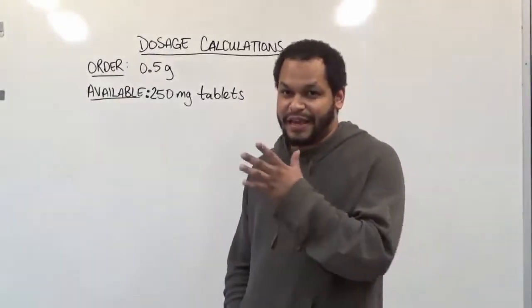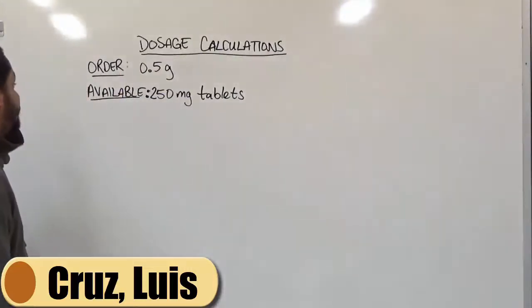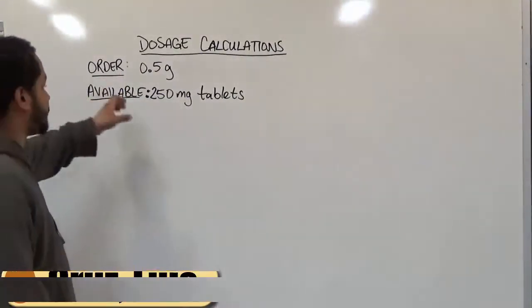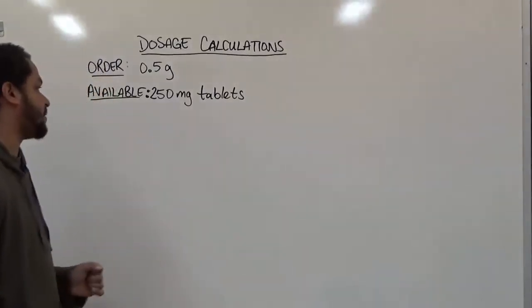Welcome to HelpYourMath.com. Here we have a dosage calculation problem. In this case, we have an order of 0.5 grams and the available substance is 250 milligrams per tablet.